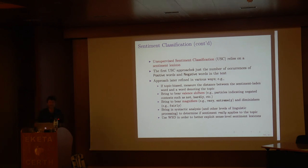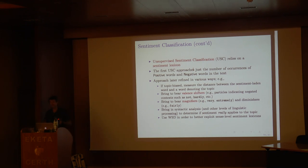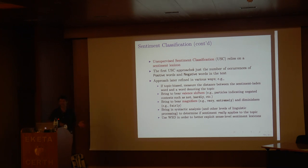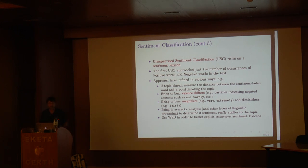The basic idea of unsupervised sentiment classification is to rely on the sentiment lexicon — a dictionary of words where each word is marked as positive, negative, or neutral. The very first naive approaches simply counted the occurrences of positive and negative words in a sentence; if positive words outnumbered negative ones, the sentence was deemed positive. This managed to outperform random baseline but was not enough on its own.